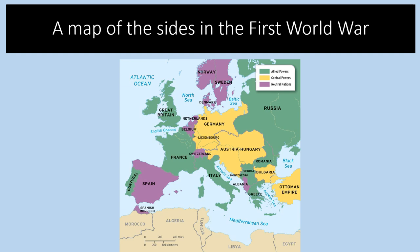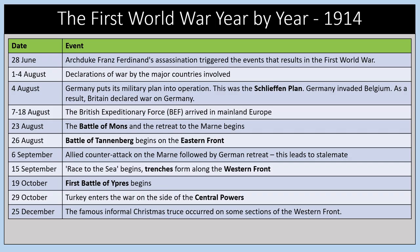This is a map of the different sides in the First World War. The two sides are known as the Allied Powers, which was primarily Great Britain, France, Italy, and Russia. Italy joined in 1915, and they were fighting against the Central Powers: Germany, Austria-Hungary, Bulgaria, and the Ottoman Empire. Soldiers from across the world fought because many European countries, particularly Britain, had empires.